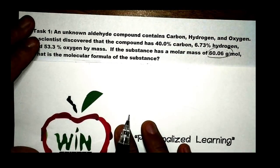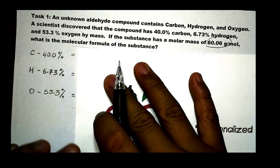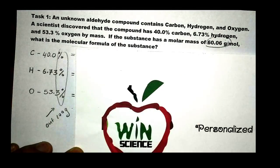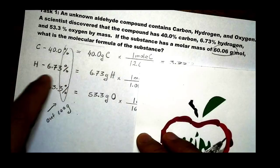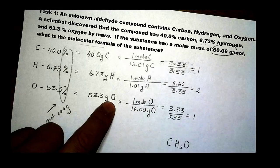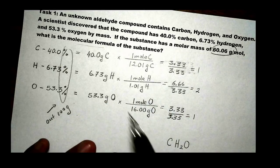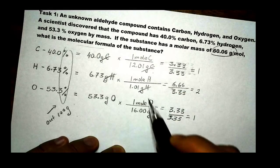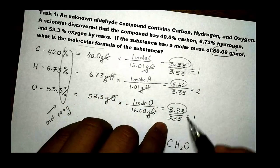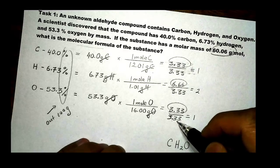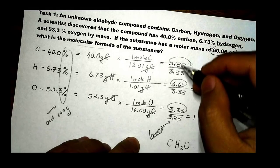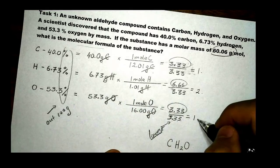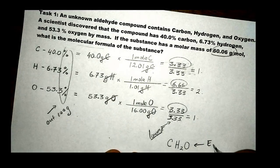Since we have percentage by mass, if we assume 100 grams of compound, we can convert each percentage directly to mass: 40 g of carbon, 6.73 g of hydrogen, and 53.3 g of oxygen. Using stoichiometry to convert grams to moles, and then dividing all moles by the lowest value — 3.33 — to get whole number ratios, we get 1 carbon, 2 hydrogen, and 1 oxygen. This gives us the empirical formula CH₂O.